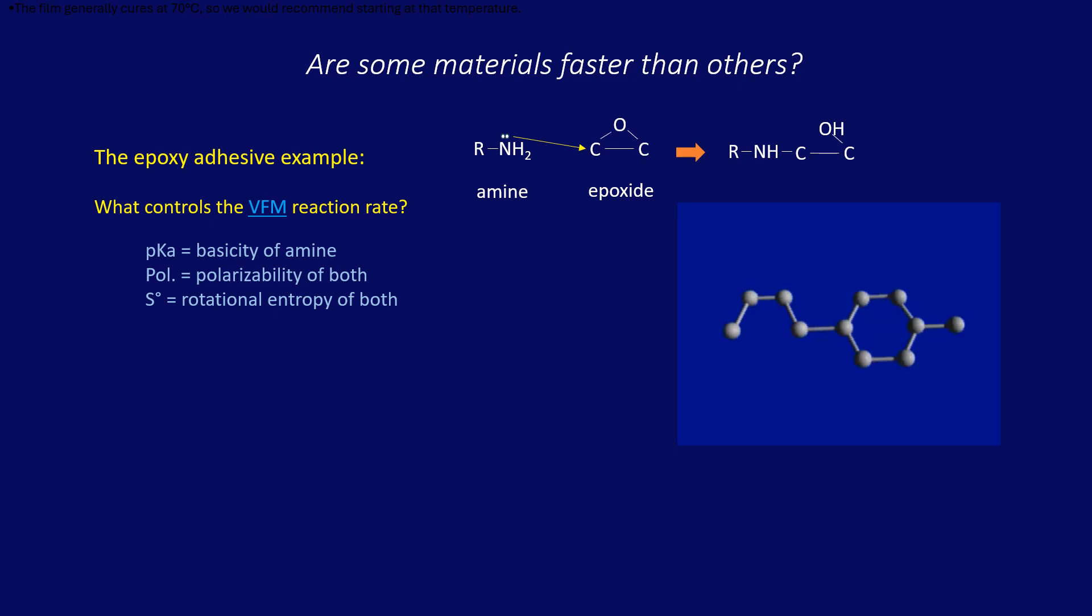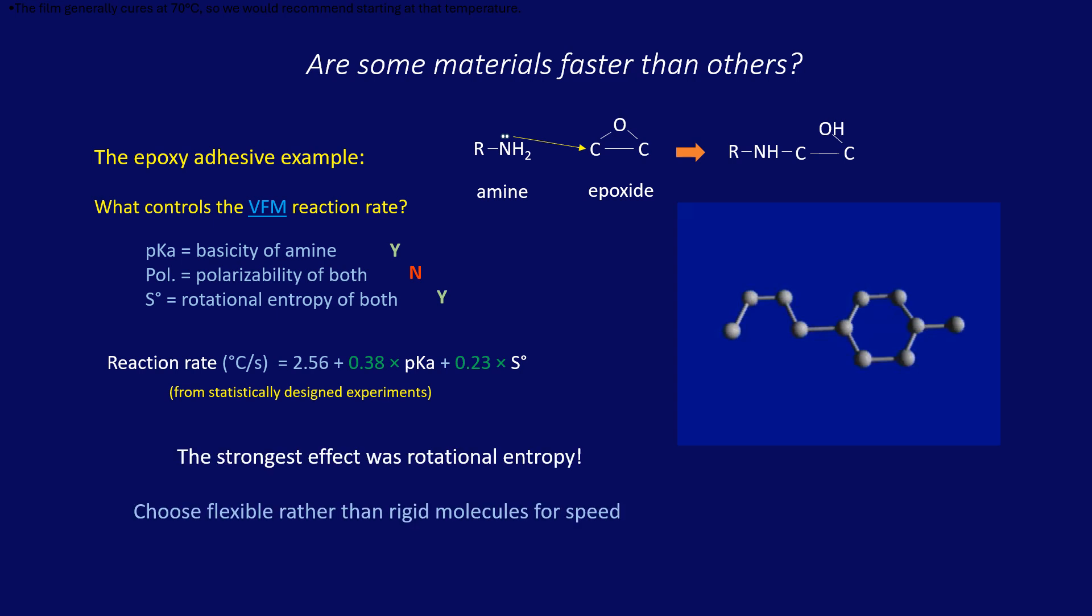But here's the data. Yes, amine basicity is effective, but polarizability is not. That's odd. It turns out that rotational entropy is the best way to speed up a microwave reaction.